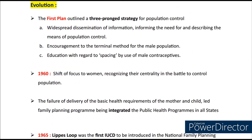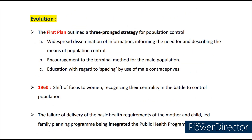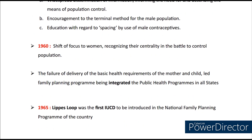Now let's look at the evolution of family planning or the major milestones. The first plan has three strategies: widespread dissemination of information, informing the need for and describing the means of population control; encouragement to the terminal method for the male population; and education with regard to spacing by use of male contraceptives. In 1960, the focus was shifted to women, recognizing their centrality in the battle to control population. Later, the failure of delivery of the basic health requirements of the mother and child led the family planning program to be integrated with the public health programs in all states.